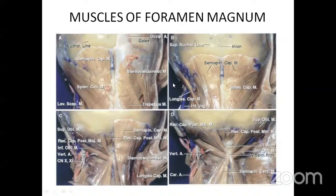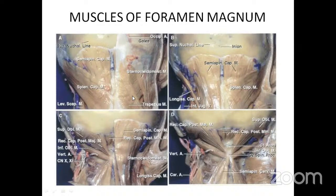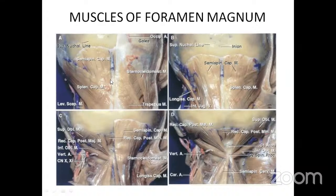Moving to muscular anatomy, we perform a step-by-step dissection from superficial to deep. The outermost layers include the sternocleidomastoid and trapezius muscles forming the posterior triangle. Removing these reveals the splenius capitis and semispinalis capitis. Another important triangle near the foramen magnum is the suboccipital triangle, which we will encounter shortly.